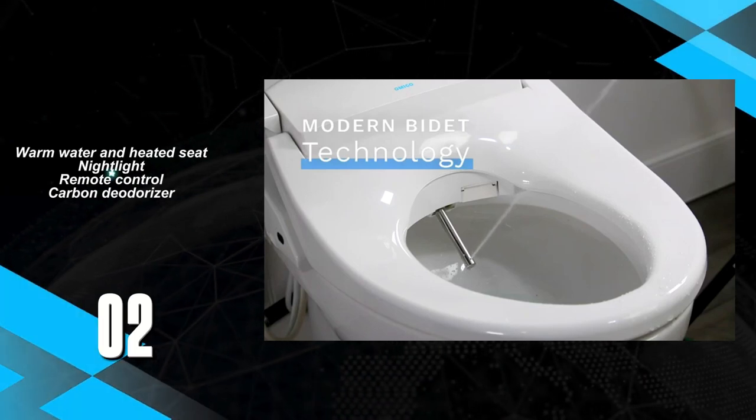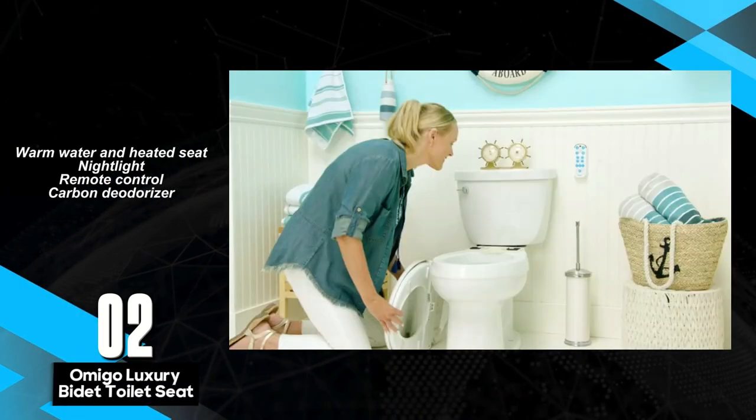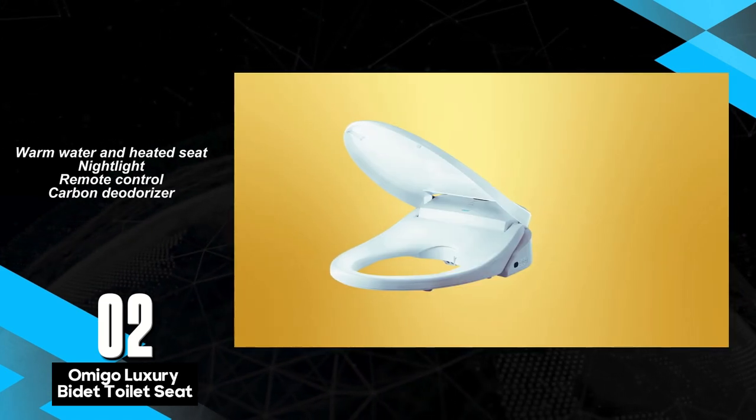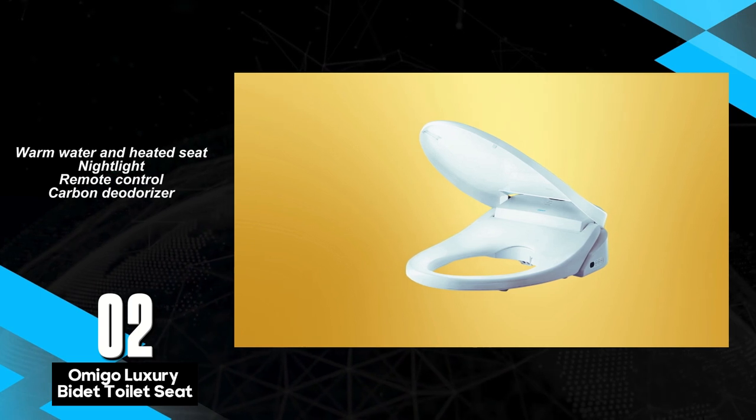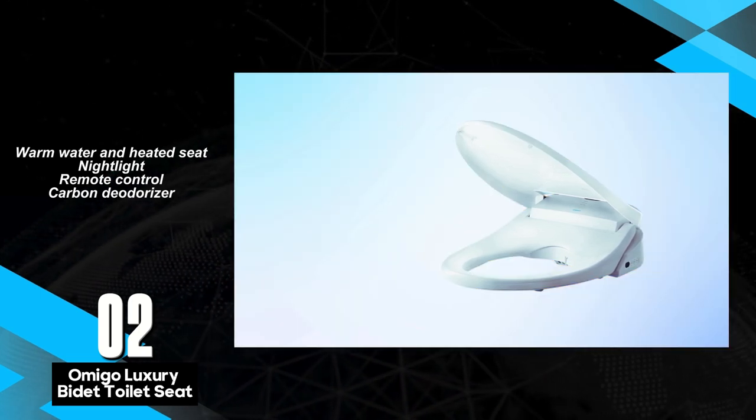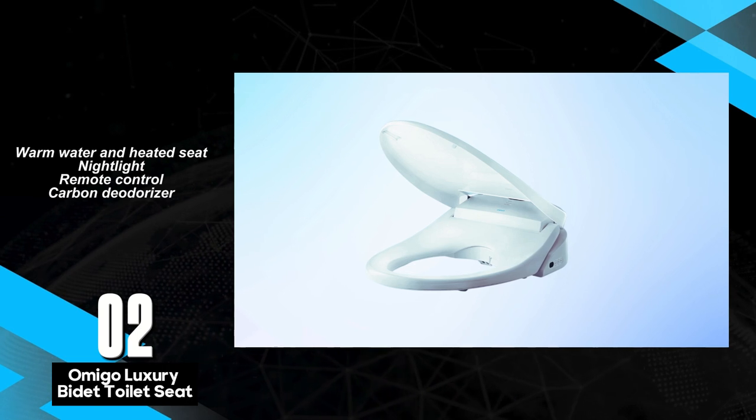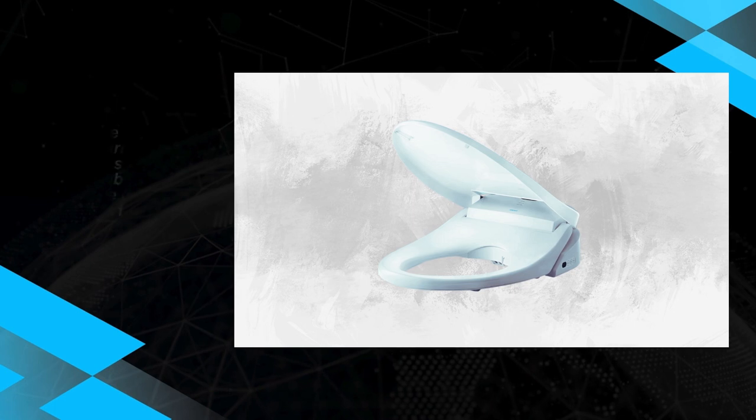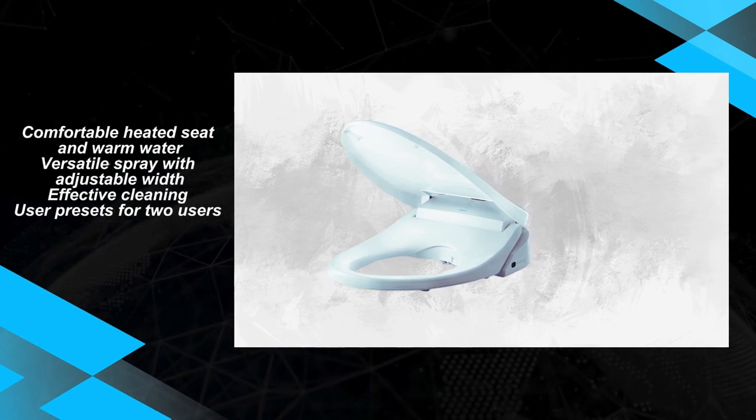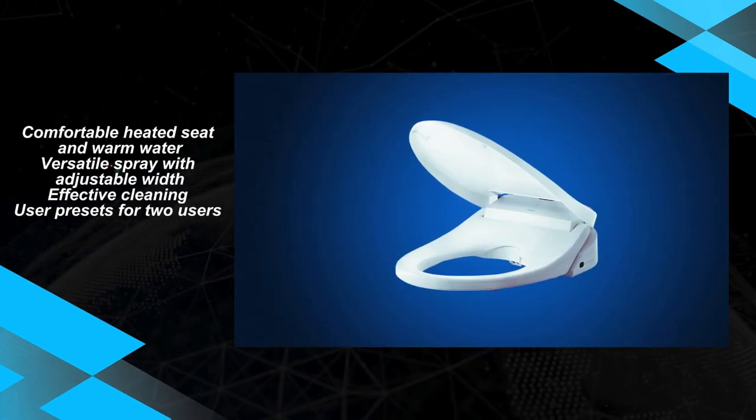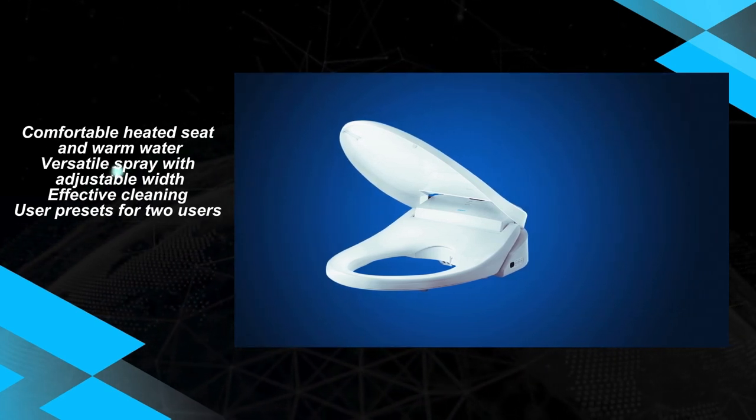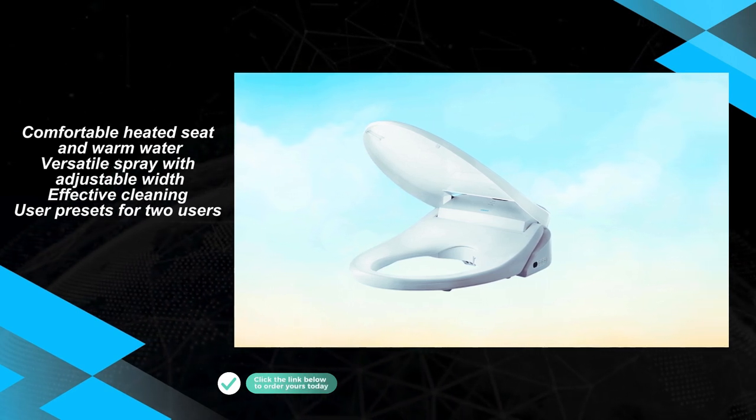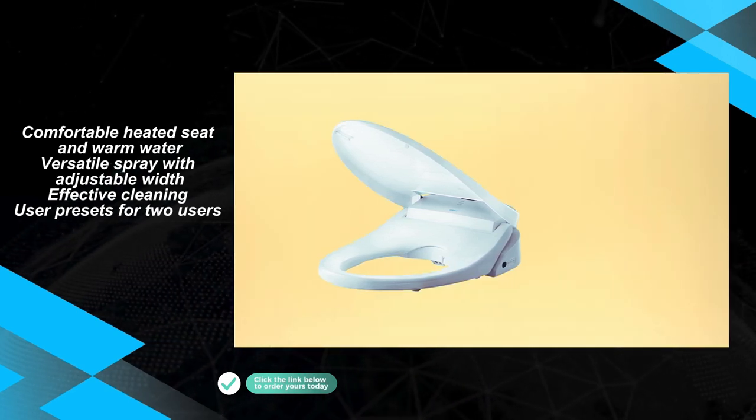The Amigo Luxury Bidet Toilet Seat offers users a comfortable and versatile cleaning experience with its array of features, including warm water, a heated seat, and adjustable spray settings. However, its controls and remote can be sources of frustration due to unclear functionality and reliance on batteries. Equipped with front and rear wash options, adjustable water temperature, seat temperature, dryer temperature, spray width and position, the Amigo ensures a customized experience tailored to individual preferences. The inclusion of user presets for two users further enhances convenience.